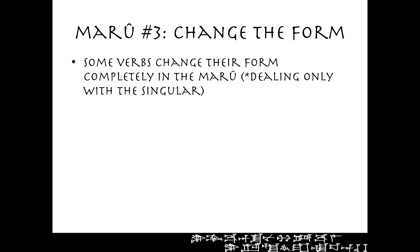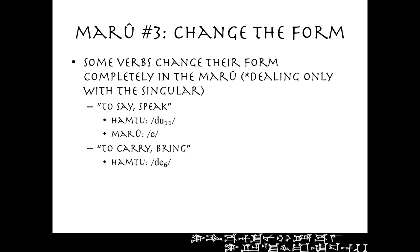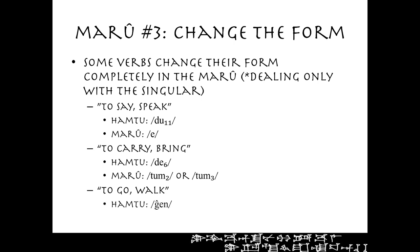The third way maru verbs are formed is by completely changing the form — these you just have to memorize. We'll deal with the singular here: hamtu singular, maru singular, hamtu plural, and maru plural. The verb do11, 'to say or to speak': in the maru it goes to 'a.' De6, 'to carry or to bring': mu-un-de6, 'he brought'; in the maru form you see tum2 or tum3. Nyen, 'to go or to walk,' very common, is nyen in the hamtu but do in the maru. So the three ways are: adding E, doubling the base, and completely changing the form — like sit to sat.